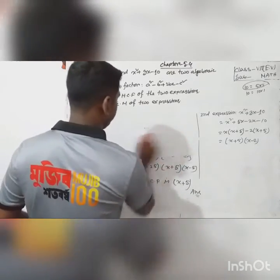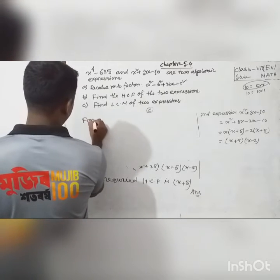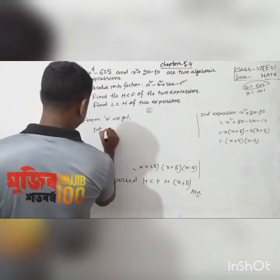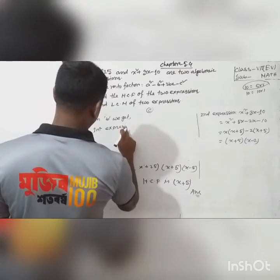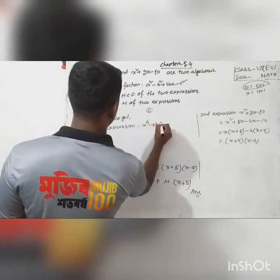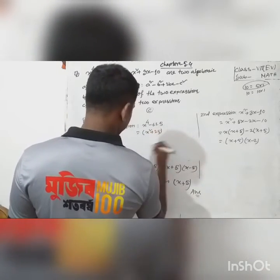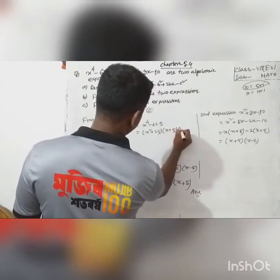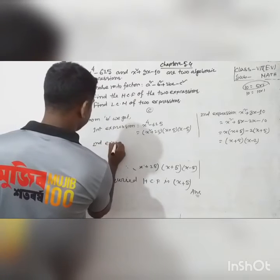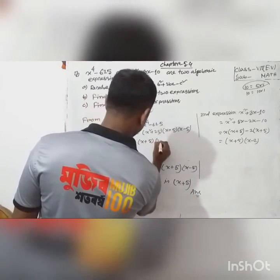Number C: find the LCM of the two expressions. From part B we get: first expression x⁴ minus 625 equals (x² plus 25)(x plus 5)(x minus 5), and second expression equals (x plus 5)(x minus 2).